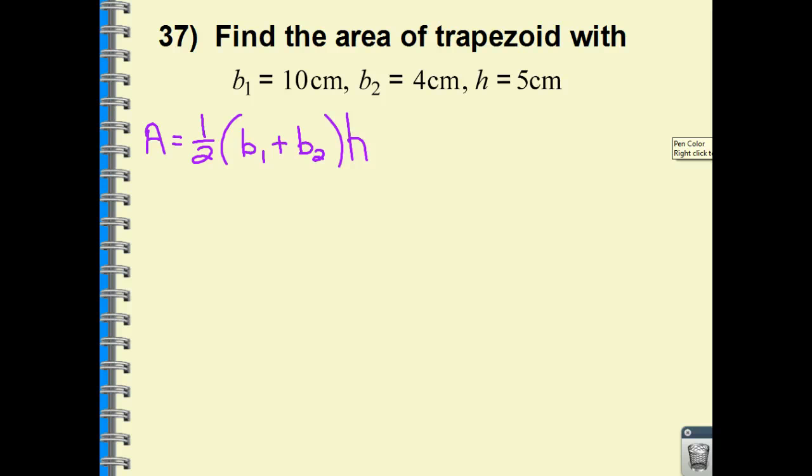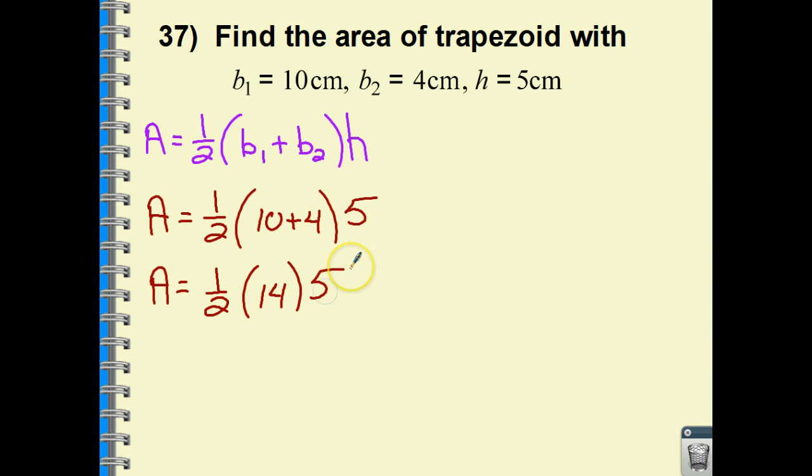Let's just plug in what we have. The area equals one half. The sum of B1 and B2—they give us 10 and 4. So the sum of that is 14 multiplied by the height, which is 5. These are just basically plug in numbers and solve. A half of 14 is 7 multiplied by 5. So the area is equal to 35. What units? We have centimeters. So the unit is centimeters, and we are doing area, so we are in the power of 2 for that unit.